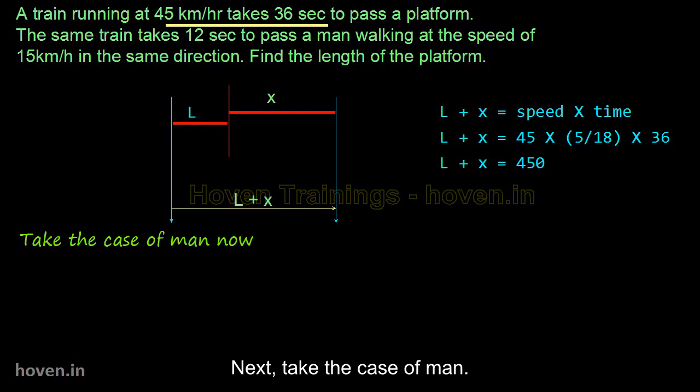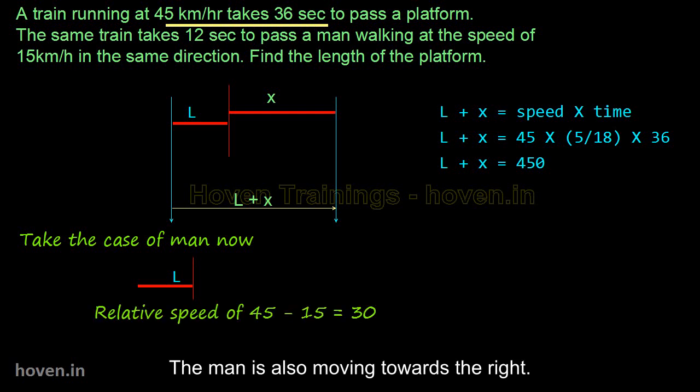Next, let us take the case of man. Suppose this is the train. Let this be the man moving at 15 km per hour. He has just now been touched by the train. The man is also moving towards the right.